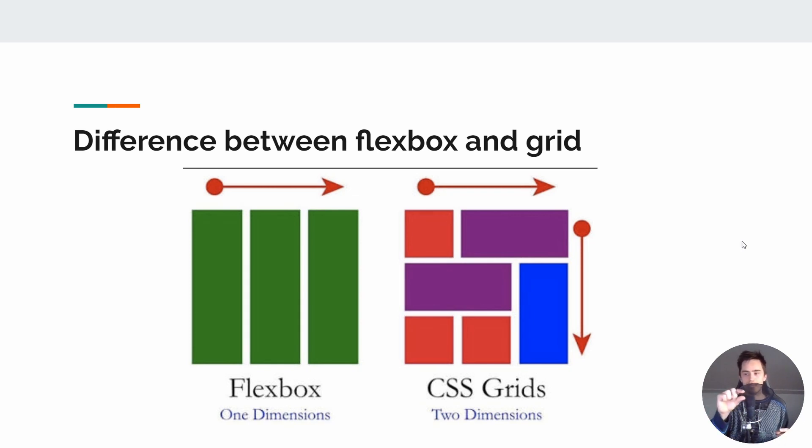so only on the x-axis, while CSS Grid is sort of like a table, right? So you can have the y and the x-axis. This is how it is very commonly described.